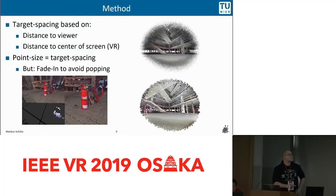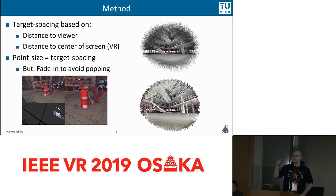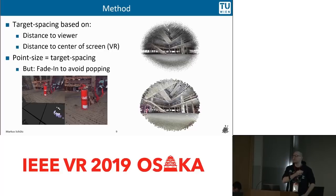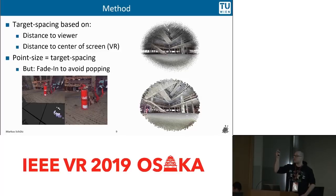The target spacing we use is first dependent on the distance to the viewer — the farther away, the less density and the higher the spacing. But for virtual reality, it's also dependent on the distance to the center of the screen. Due to the distortions of the lenses, we can't really see all the detail in the periphery — this is a hardware issue, not a perception issue. So rendering full detail in the periphery is unnecessary, and we discard those points for lower density. Because we don't have connectivity as with triangles, we end up with holes there.